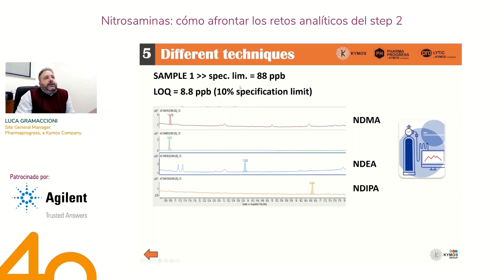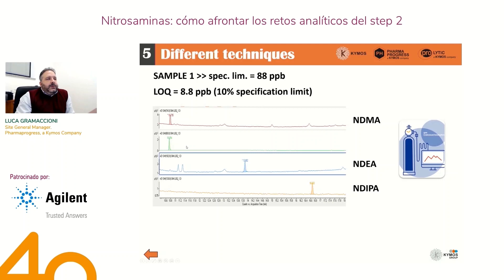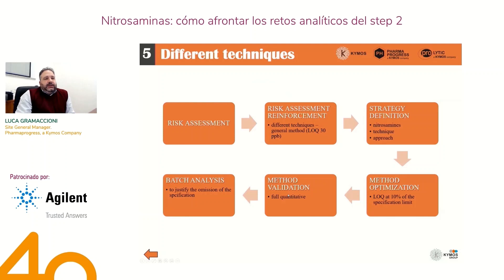For sample one, with a specification limit of 80 ppb, we used gas chromatographic techniques because NMBA is not necessary to detect, and these are the chromatograms at the LOQ concentration for the three nitrosamines they decided to search according to the risk assessment. In this case, we added the deuterated internal standard of NDMA and evaluated the possibility to use this internal standard also for the other analytes. The results were good. In this way they performed the method validation for full quantitative determination and then analyzed a lot of batches of these different samples, justifying the omission of the specification.